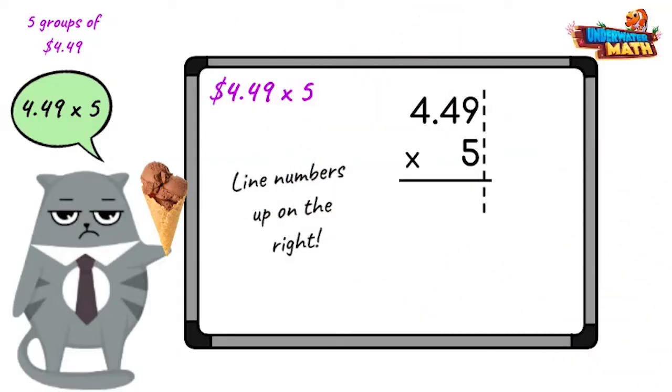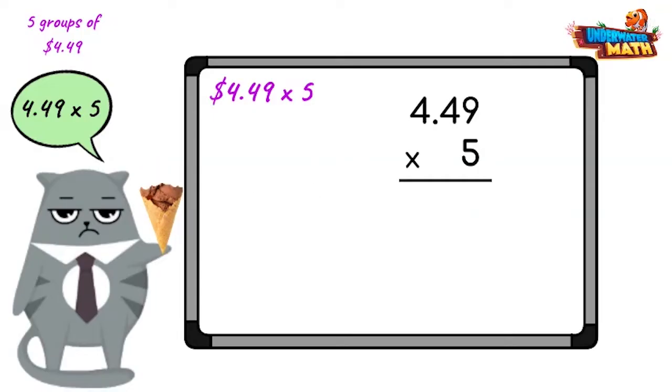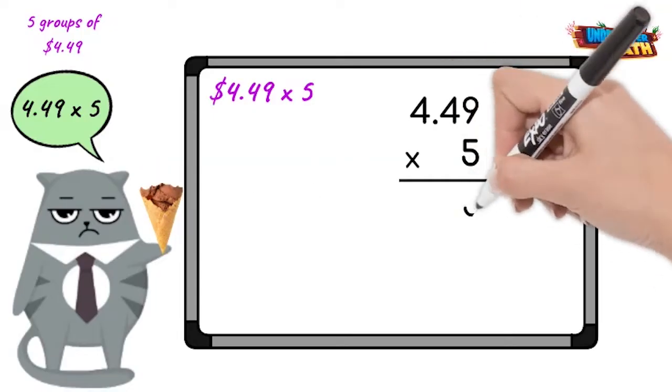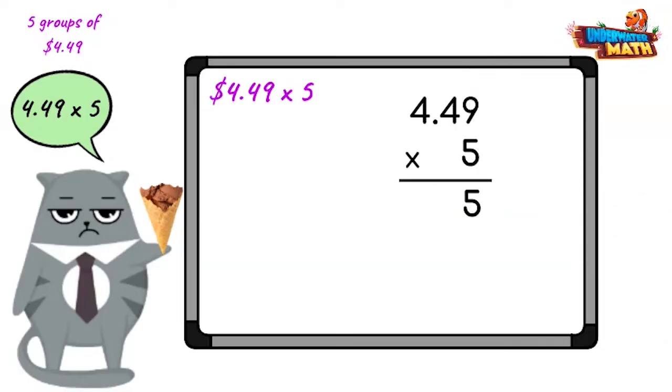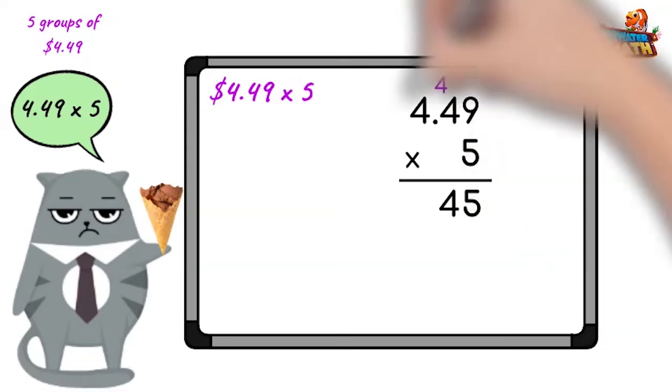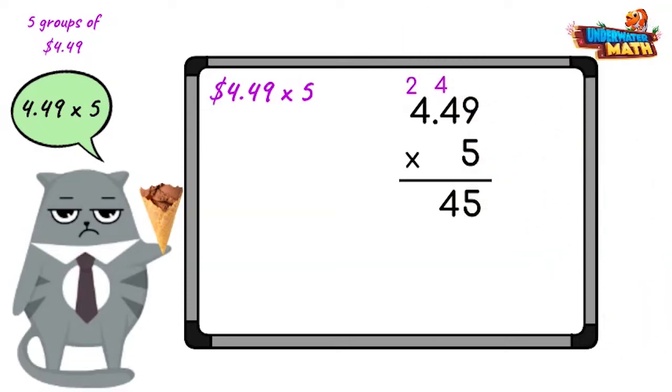Just like regular multiplication too. Absolutely. Now let's multiply. Five times nine is 45, and we carry the four. Five times four is 20, plus the four is 24, and we carry the two. Five times four plus two is 22.